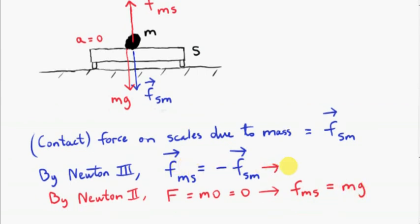Now, from the previous part, we know that the magnitude of the force on the mass due to the scales is equal to the magnitude of the force on the scales due to the mass. So, FMS is just FSM, so the magnitude of the force on the scales due to the mass is equal to the weight.